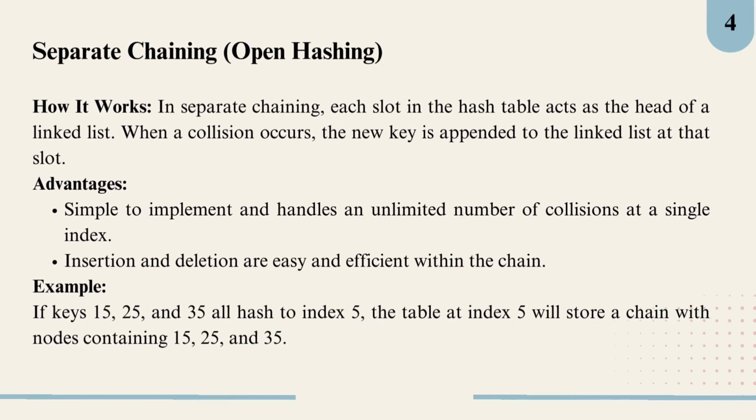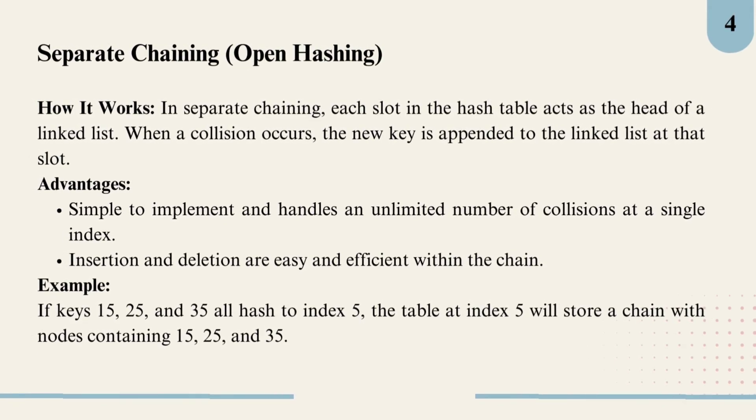Separate chaining is a simple and effective method to handle collisions. Each index in the hash table doesn't just store a single item but actually holds a linked list. If multiple keys hash to the same index, they are simply added to the list at that slot. It's like having a waiting line where each person joins the queue if the initial slot is taken. This approach works well if collisions are frequent because linked lists can grow to store as many elements as needed at any index. For example, if keys 15, 25, and 35 all map to index 5, they are added to a linked list at that position, making it easy to access or add additional items without needing extra memory.